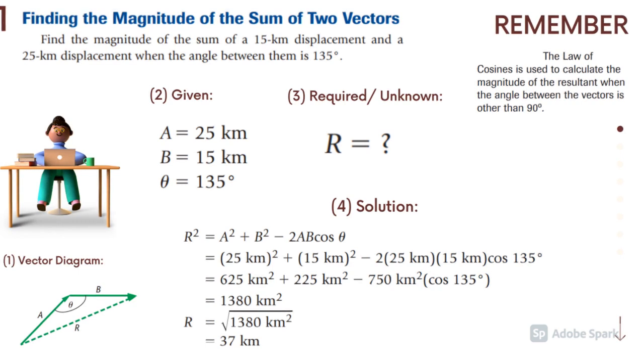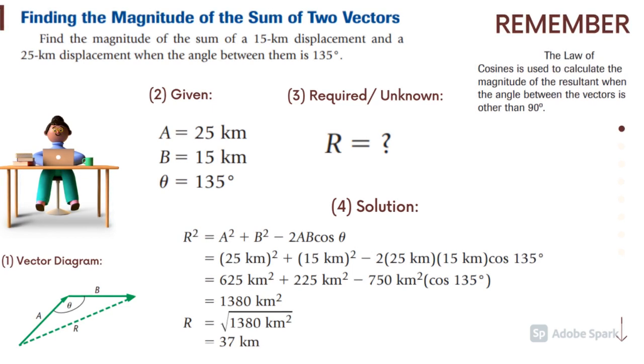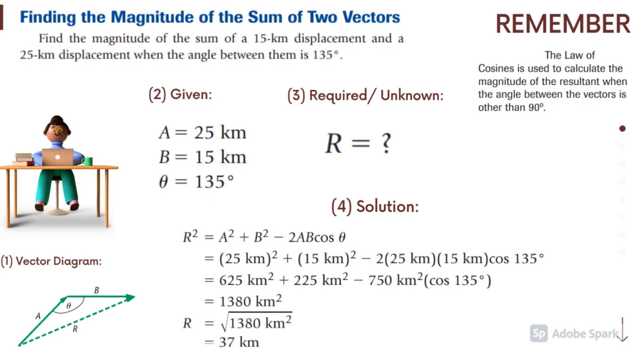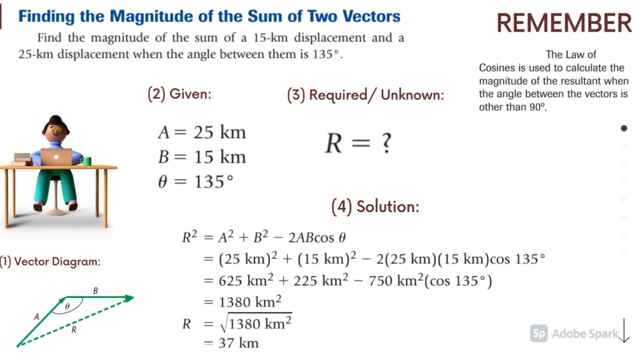Then, the unknown in this problem is the resultant vector. To be able to compute for the value of R, use the cosine law. R squared is equal to A squared plus B squared minus 2AB cosine theta. After substitution, you'll be able to get the value of R which is equal to 37 kilometers.